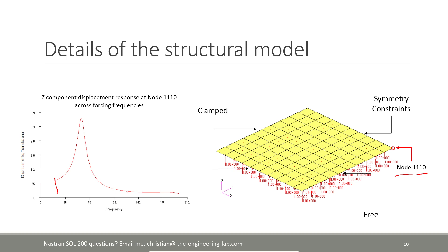This is the displacement result response for node 1110 for the given set of forcing frequencies. Our goal is to minimize this curve as much as possible — specifically by minimizing the RMS value.